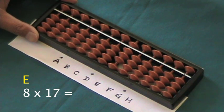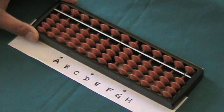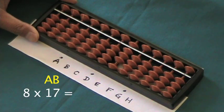Now, we'll set the two-digit multiplier on the left, leaving enough space. Two blank rods. Let's put the 17 on rods A and B.